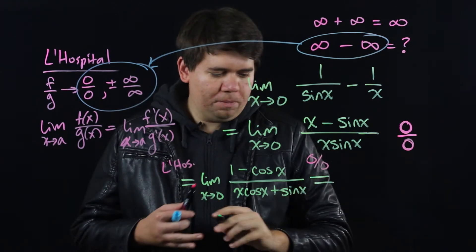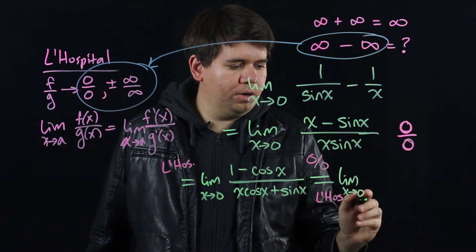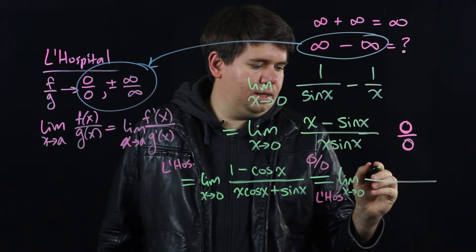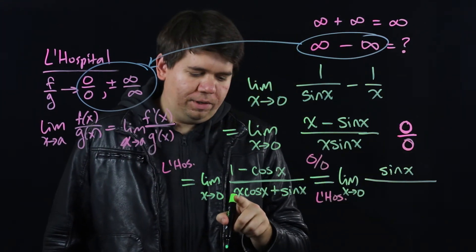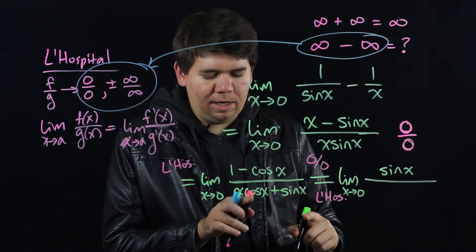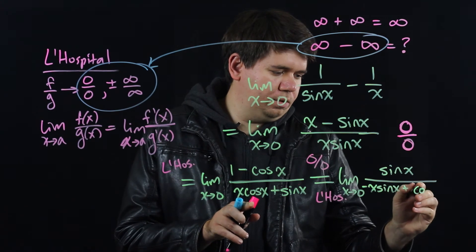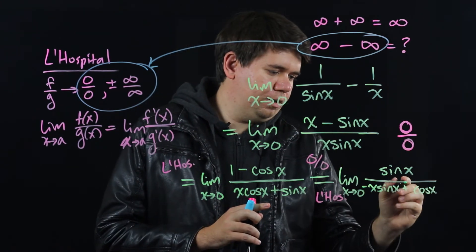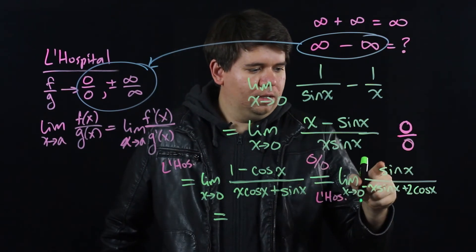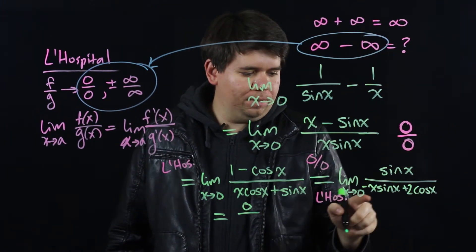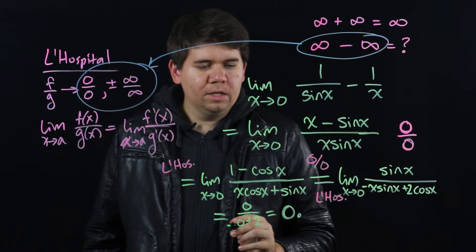Since it's still 0 over 0, we apply L'Hôpital's rule a second time. We now have the limit as x goes to 0 of: on top, the derivative of minus cosine is positive sin(x); on the bottom, using the product rule on x·cos(x), we get x times the derivative of cosine, which is minus x·sin(x), plus the derivative of x is 1, giving cos(x), plus the derivative of sin(x) gives another cos(x), so it's minus x·sin(x) plus 2·cos(x). Taking the limit, sin(0) = 0 on top, and on the bottom we get 0 plus 2 times cos(0), which is 2. So the answer is 0 over 2, which is 0.